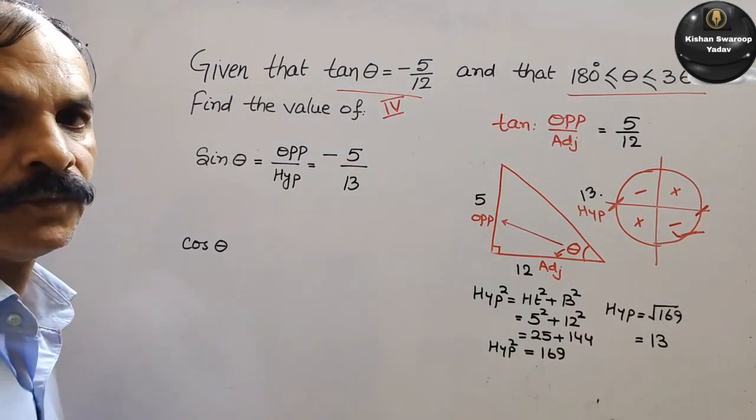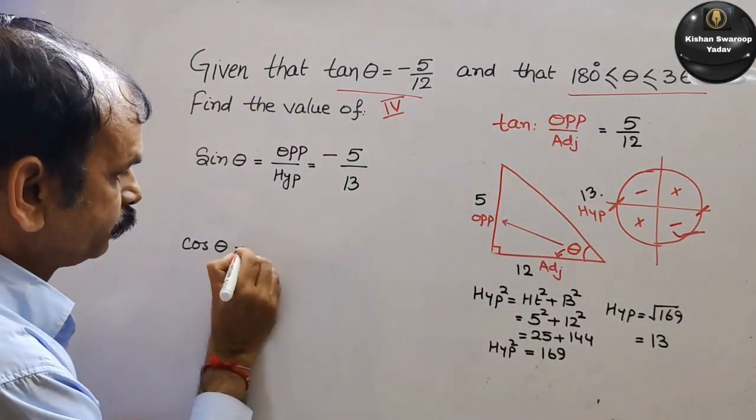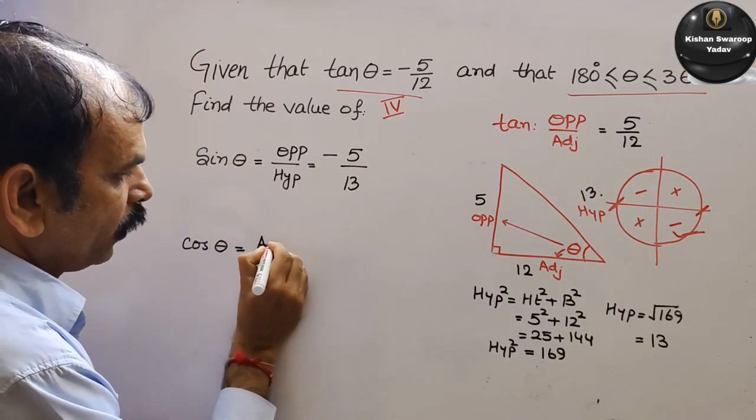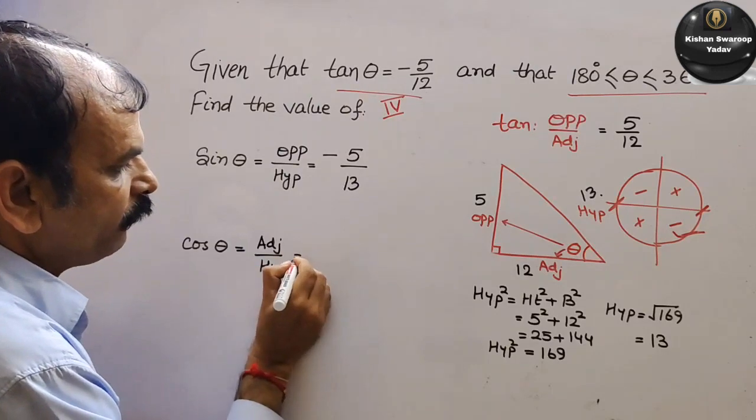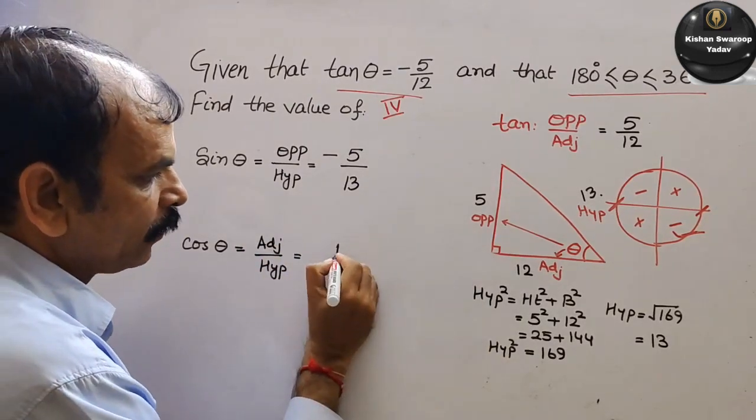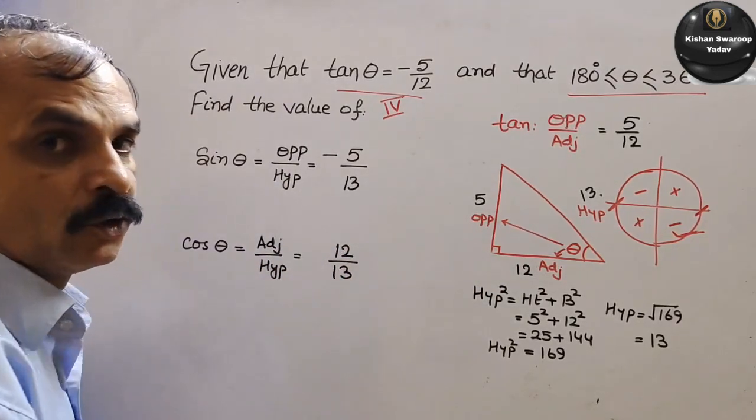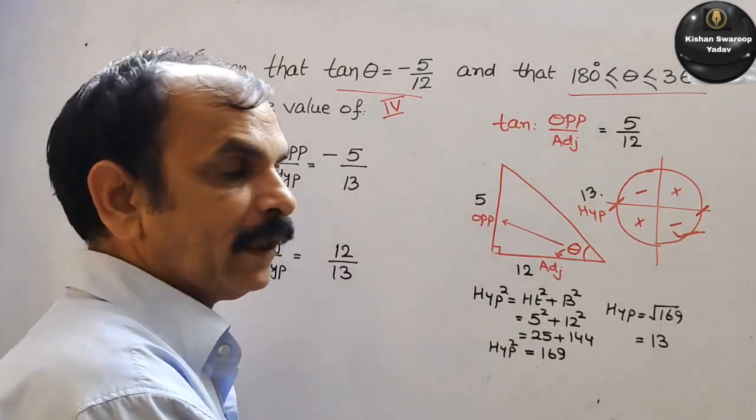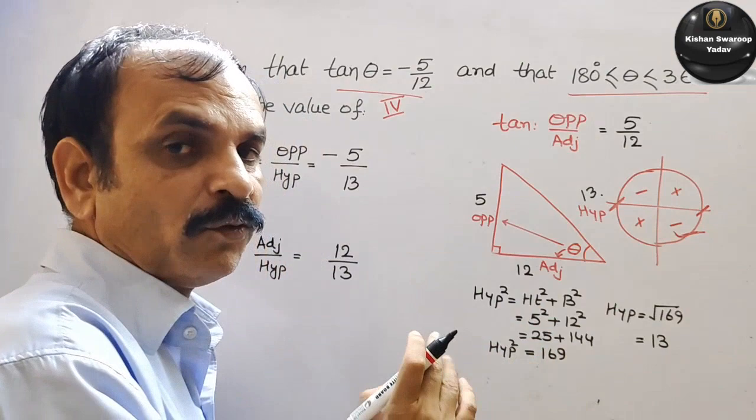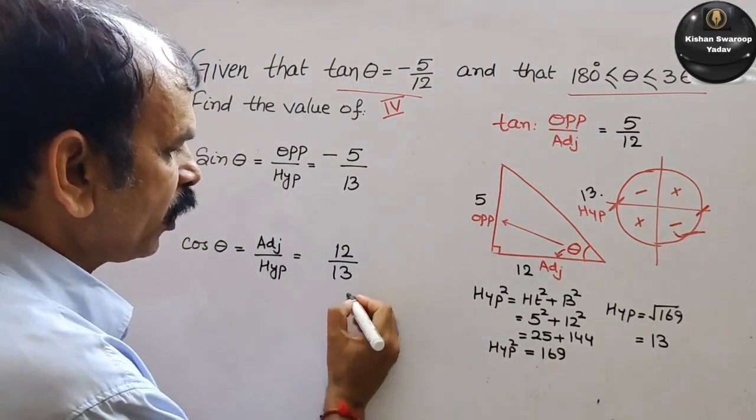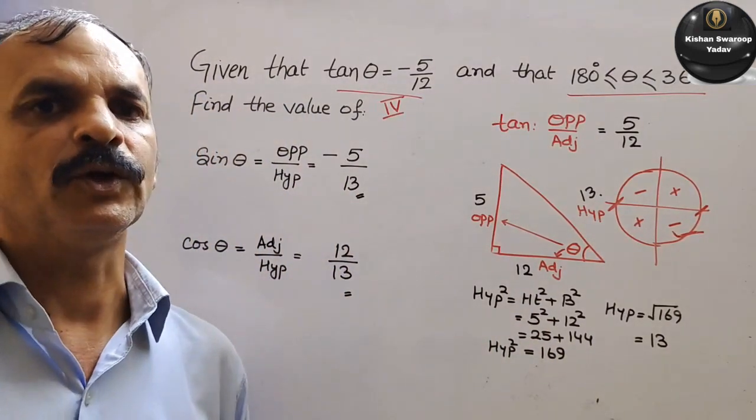4th quadrant comes to cos. Cos is adjacent by hypotenuse. Adjacent by hypotenuse. First we will write the value. Adjacent is 12 and the hypotenuse is 13. We know that cos is positive in the first and fourth quadrant. So fourth is positive for that. Therefore your answer is the same. Like this we have to do it.